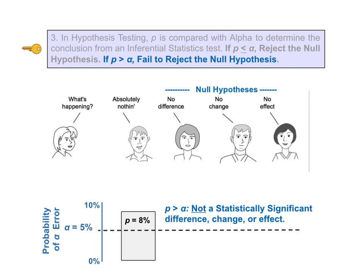If, however, P is calculated to be greater than alpha, this means that there is not a statistically significant difference, change, or effect — which is the same thing the null hypothesis says. So the conclusion from our test is to agree with the null hypothesis. We don't reject it. More formally, we say that we fail to reject it. This is somewhat confusing language, and some experts say that it is okay to say that you accept the null hypothesis instead of failing to reject it.